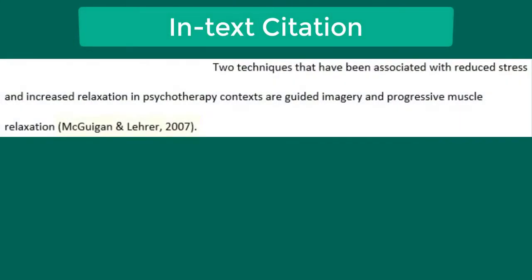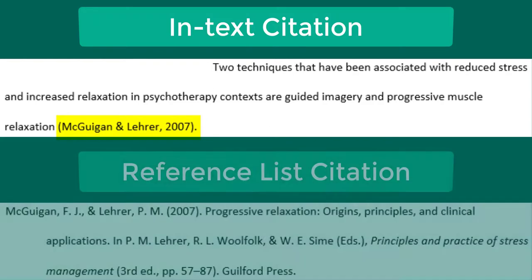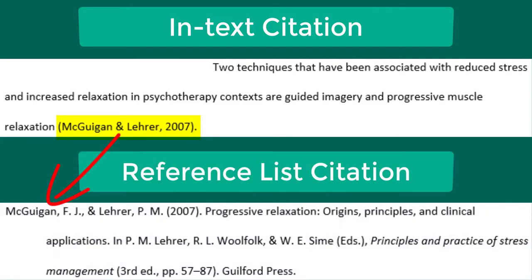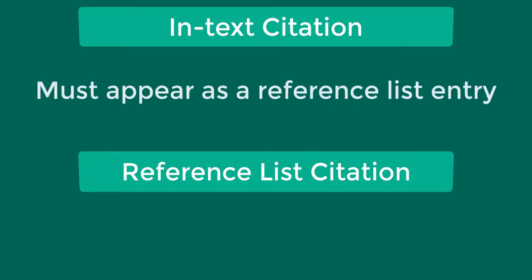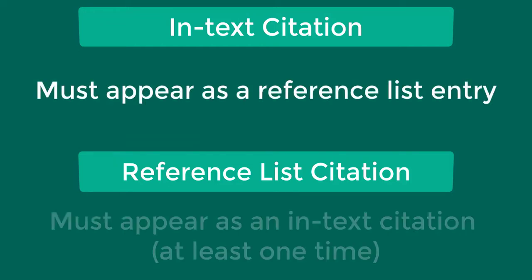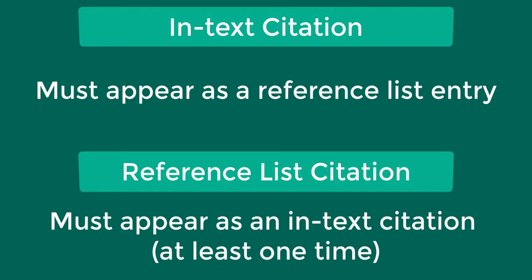While your in-text citation contains the author, date, and sometimes a page number, the citations in your reference list contain much more information. Anyone reading your paper should be able to easily find the resources you consulted by looking at the citations in your reference list. Each source cited as an in-text citation must appear in your reference list, and each source cited in the reference list must appear as an in-text citation in your paper.